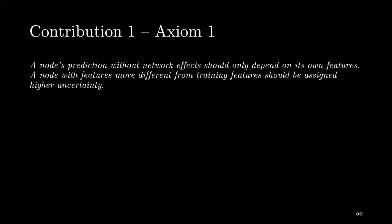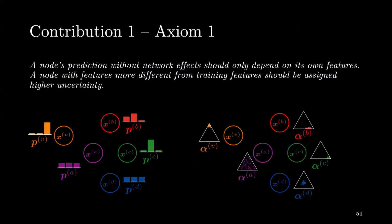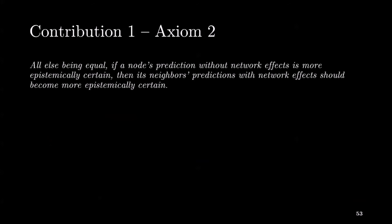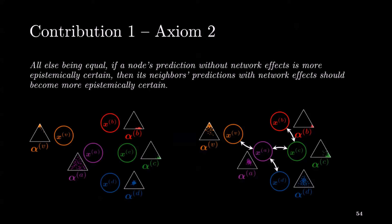A node with features more different from training features should be assigned higher uncertainty. For example, on the diagram below, the purple node is assumed to have features more different from training data than the yellow node, which leads to higher aleatoric and epistemic uncertainty. Our second axiom describes the desired behavior for epistemic uncertainty with network effects. It says: all else being equal, if a node prediction without network effects is more epistemically certain, then its neighbors' predictions with network effects should become more epistemically certain. For example, on the diagram below, the prediction of the purple node becomes more epistemically certain since all its neighbors are epistemically certain.